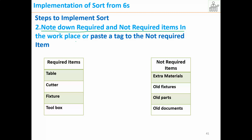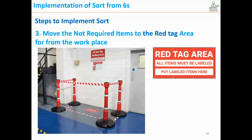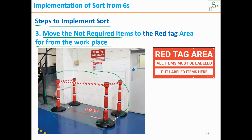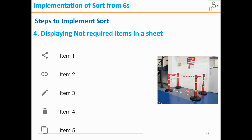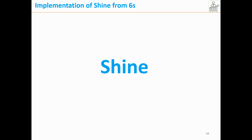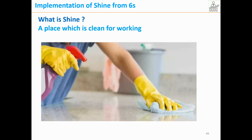Next, note down the required and not-required items in the workplace, or paste a tag to the not-required items. We list what is required and what is not, then paste the tag. Then we move the not-required items to the red tag area, far from the workplace. We create a red tag area by making a border, and paste a sheet listing all the items that should be there.